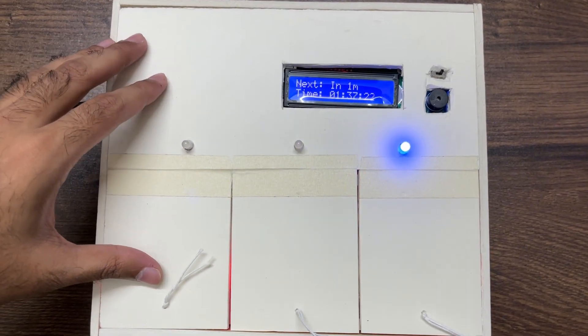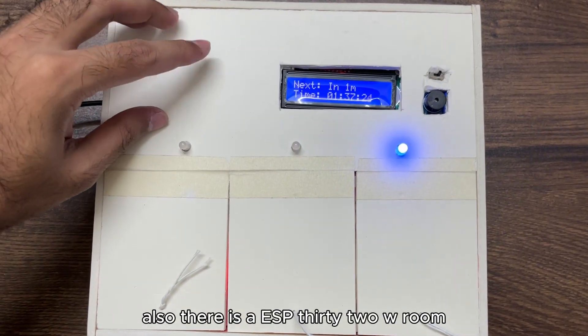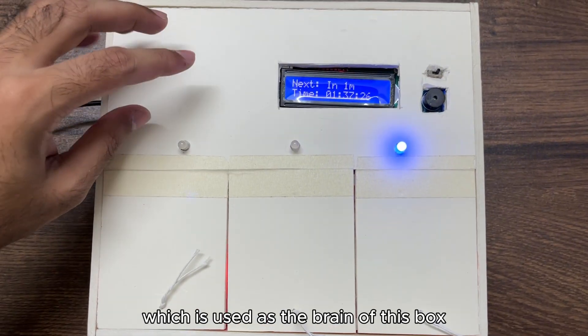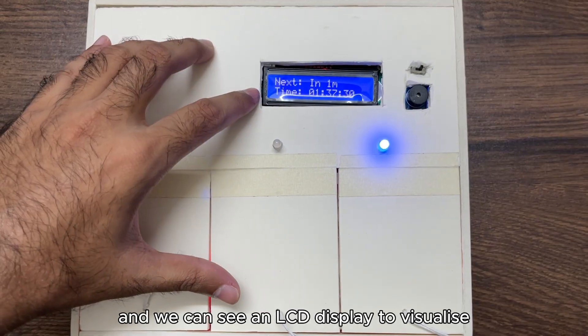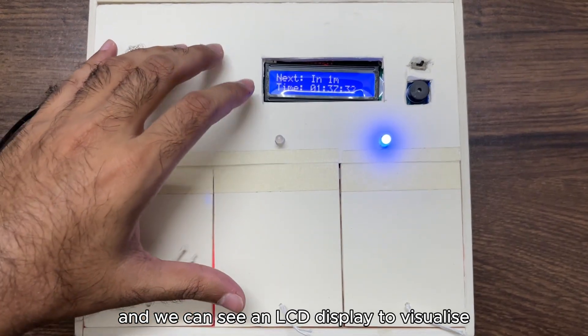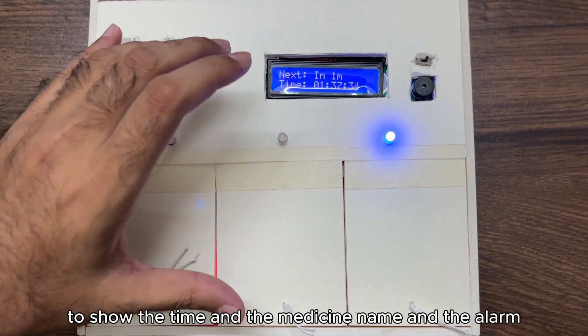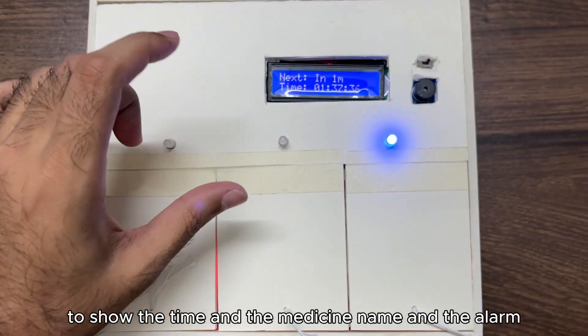There is ESP32 dual core which is used as the brain of this box. We can see an LCD display to visualize, to show the time and the medicine name and the next alarm time.